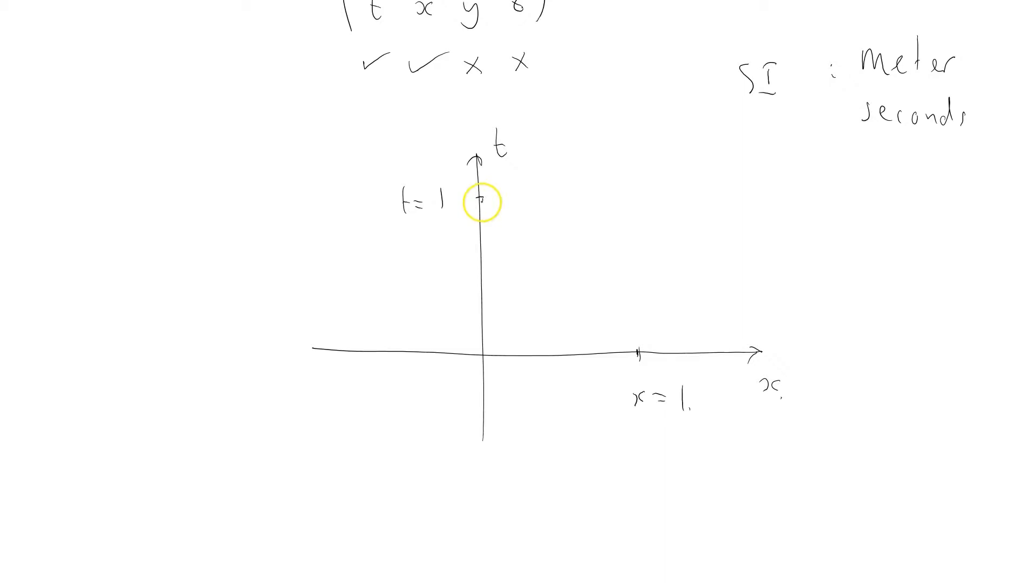Well, in one second it's traveled, what's the speed of light in SI? 3 times 10 to the 8 meters per second. It's traveled a huge distance. So if I draw my photon, it moves at this very shallow angle here. That's a light ray which moves along here. And that obscures the symmetry that I want to bring out between time and space. So this is no good.